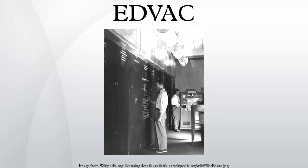ENIAC inventors John Mauchley and Jay Presper Eckert proposed the EDVAC's construction in August 1944, and design work for the EDVAC commenced before the ENIAC was fully operational. The design would implement a number of important architectural and logical improvements conceived during the ENIAC's construction, and would incorporate a high-speed serial access memory.